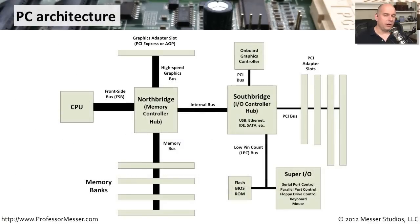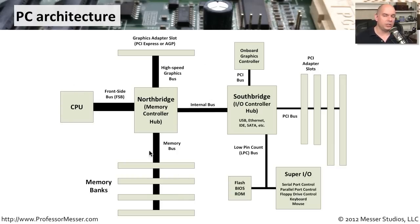If we were to look at the architecture of a computer, our adapter slots would be connected to what we call the south bridge — this is usually where we plug in expansion connections. The main processing takes place at the CPU, and it's the north bridge that connects all of the higher speed communication, for instance between the memory and the CPU. The other systems we're plugging in for interfaces or other connections are almost always on these PCI adapter slots.